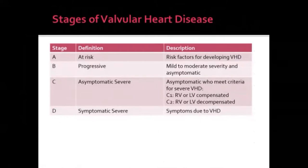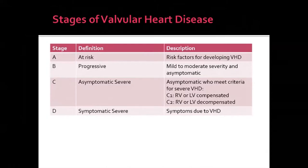Valvular heart disease is classified into stages. Stage A: patients at risk but without valvular disease. Stage B: mild-to-moderate valve lesions, asymptomatic. Stage C: severe valvular disease but asymptomatic — C1 with compensated LV/RV, C2 with decompensated LV/RV. Stage D: symptomatic severe valvular disease.